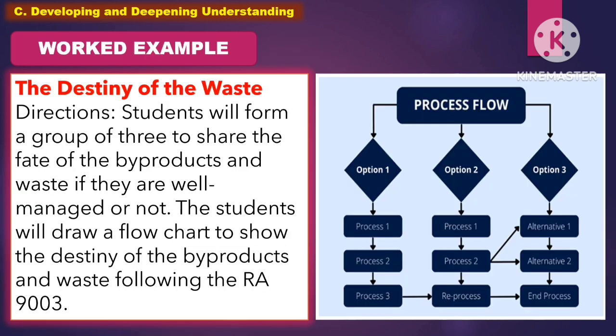For the work example, the students will form a group of three to share the fate of the by-products and waste, discussing whether they are well-managed or not. The students will draw a flow chart to show the destiny of the by-products and waste following RA-9003.